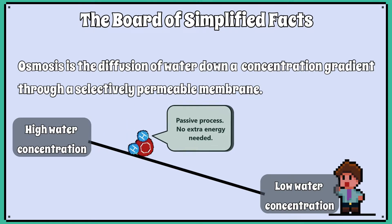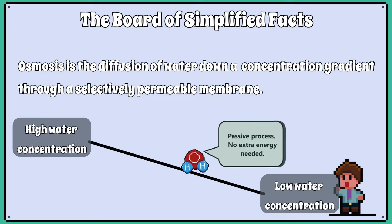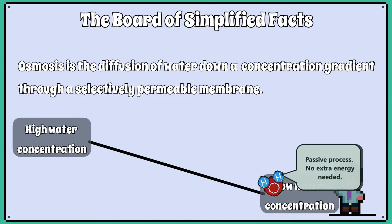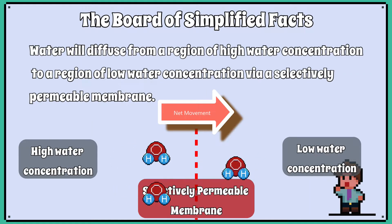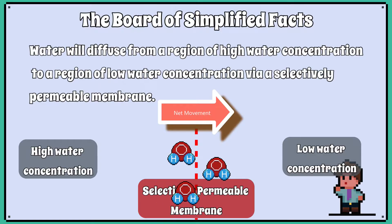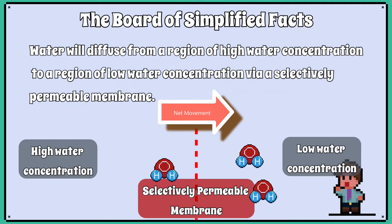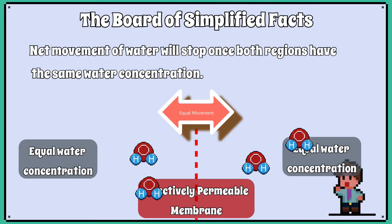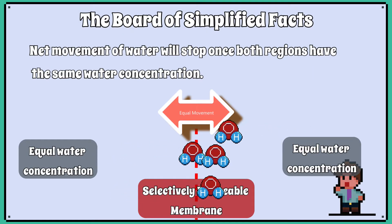Osmosis is the diffusion of water down a concentration gradient through a selectively permeable membrane. Water will diffuse from a region of high water concentration to a region of low water concentration by a selectively permeable membrane. Net movement of water will stop once both regions have the same water concentration.